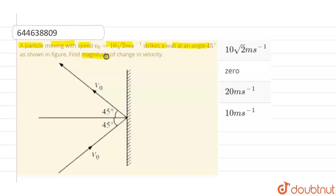Now we have to find the magnitude of change in velocity. So I can resolve this velocity v0 into two components. Let this v0 is resolved into these two components.